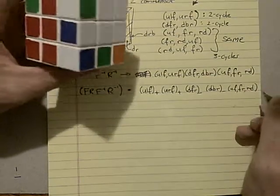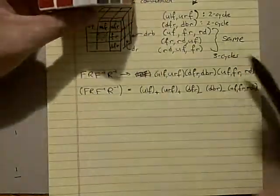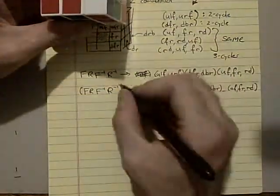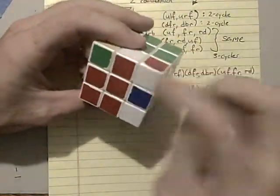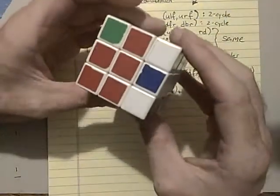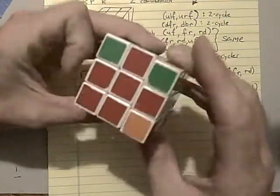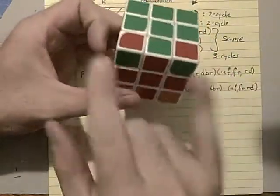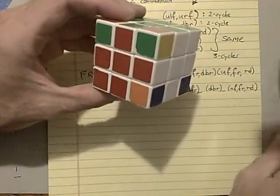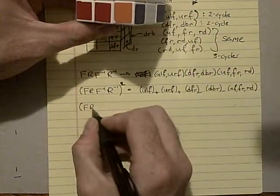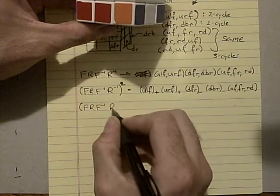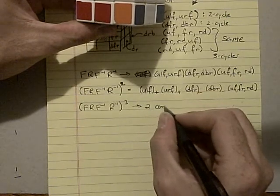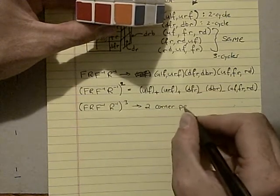Now, if I do the move one more time, you should be able to predict that doing the move three times should return all of the edges to where they started. So F, R, F prime, R prime. And now the edges have been returned to their initial spot, and we only have the corners that have been swapped. So F, R, F prime, R prime cubed results in two corner pair swaps.